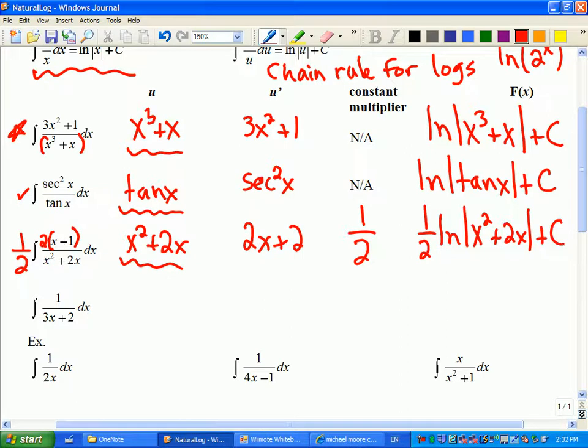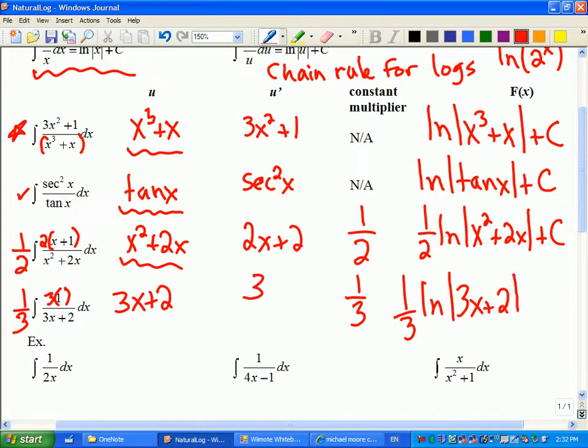Okay, so let's see here. 3x plus 2. So what I'm missing is the 3. So I'll put in the 3 here, which means I need a one-third out front. So the multiplier will be one-third. And 3x plus 2 is the function. So that would be my anti-derivative for this example we just worked on.